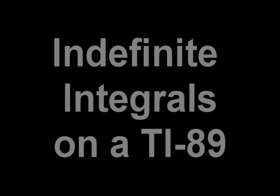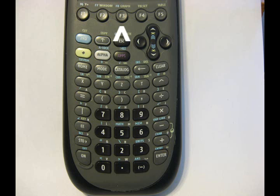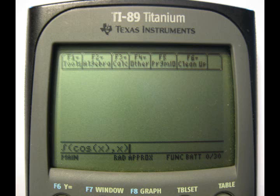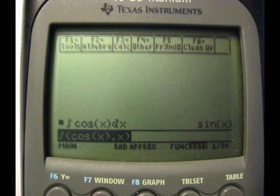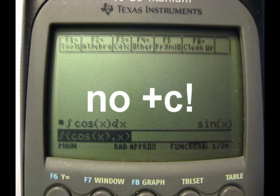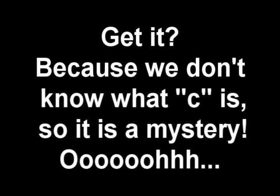To do an indefinite integral, make sure you're on the home screen, then press F3. Select integrate number 2. Then, in the parenthesis, you put the function, comma, x. The x represents the dx in the integral function. Close parenthesis. It should be noted that the answer that the calculator gives you does not have a plus c, so don't forget to add the plus c when you write the answer down, because if the dx is like the period at the end of the sentence, then the plus c is like the question mark at the end of a question.